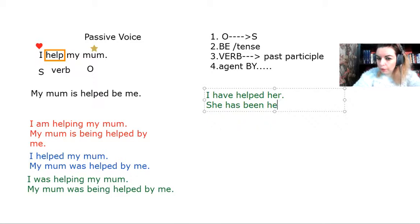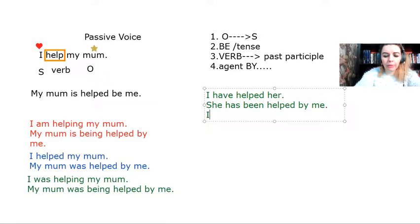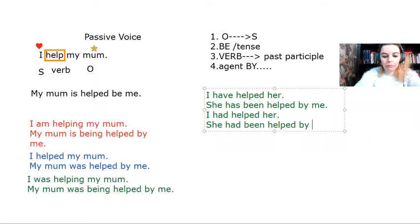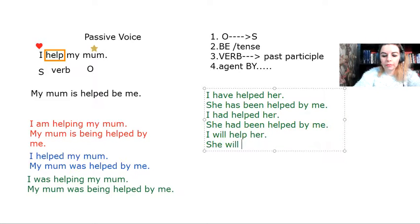The past participle of the verb help, helped by me. Okay, if I had past perfect. I had helped my mom. I had helped her. It would become she had been helped by me. I will help her. But future.